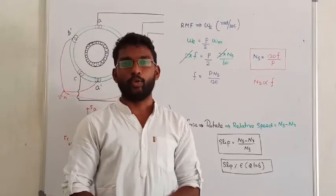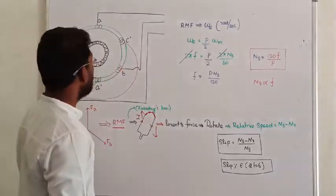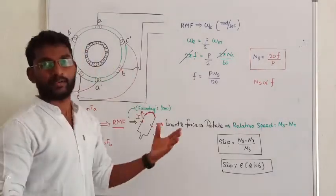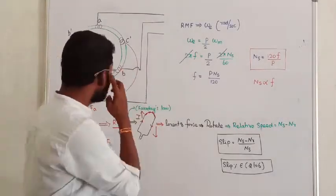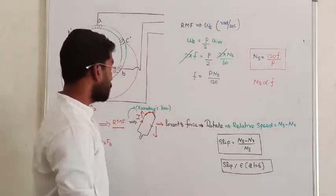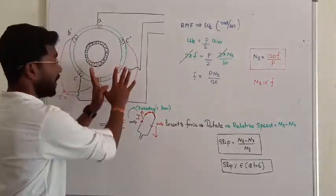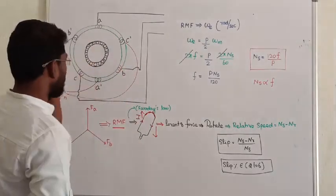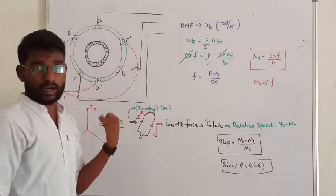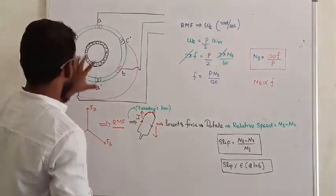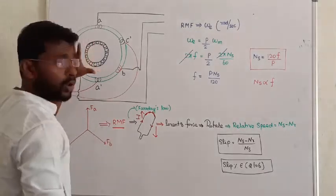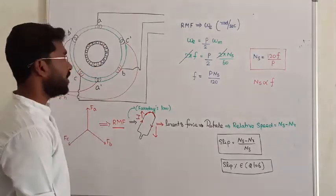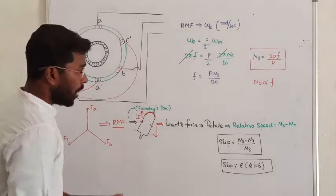Let us see the working principle of the synchronous induction machine. In the induction machine, I am taking an induction motor. The rotor can be a slip ring or squirrel cage, whatever you want. This is the rotor — some copper bars are present. Let us see how it will work; it is really very interesting.